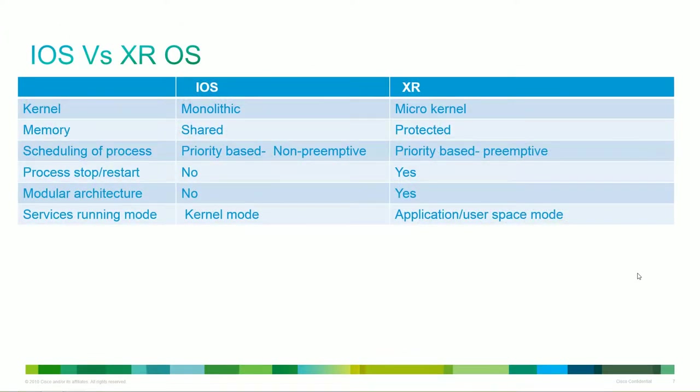So how does this differ from IOS? IOS is monolithic, versus XR which is a microkernel. The big thing is: is memory protected? In IOS, it's not — it's all shared memory. Thus, overflow attacks or vulnerabilities that target memory are more likely to occur in IOS versus XR. Are processes able to be scheduled or restarted without the device being restarted? In IOS, they're not. In XR, they are.